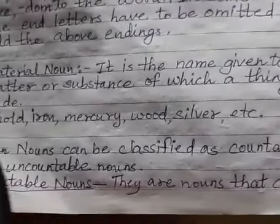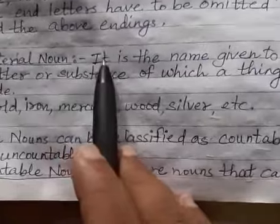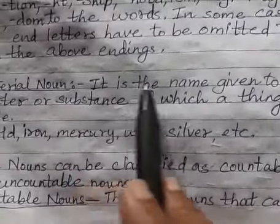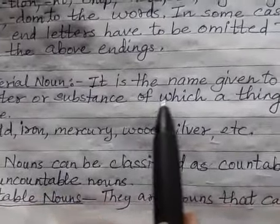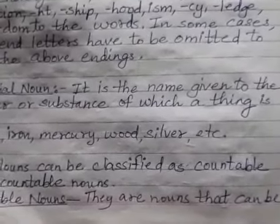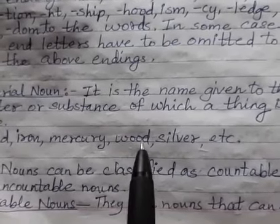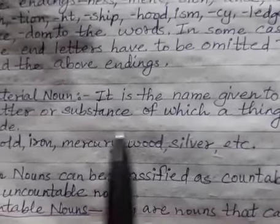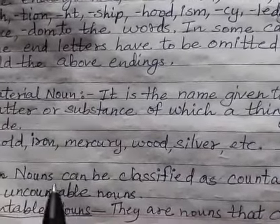The fifth type is material noun. It is the name given to the matter or substance of which a thing is made. Examples of material nouns include gold, iron, mercury, wood, silver, and so on. These are all material nouns.